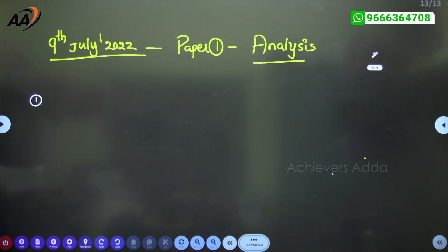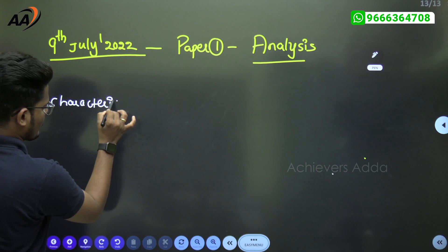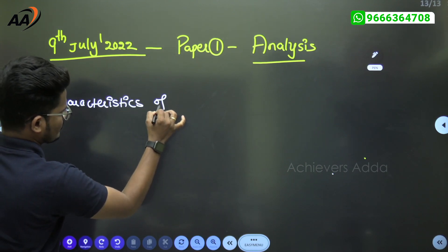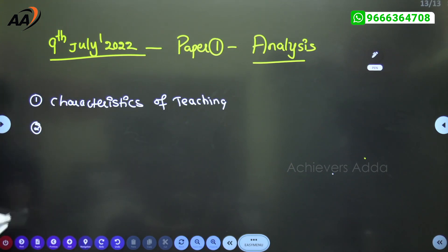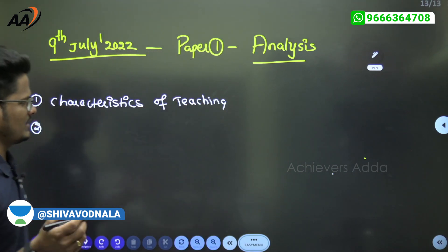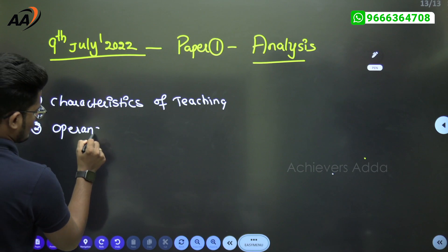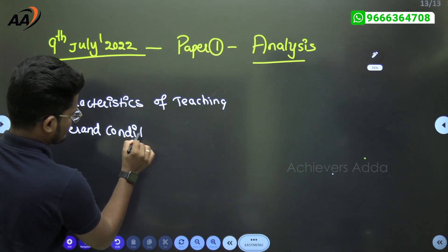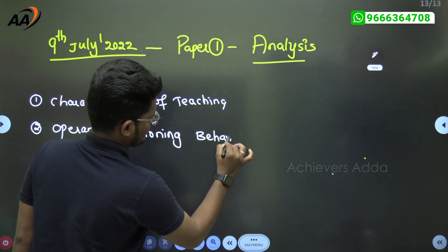Let's start with teaching aptitude questions. First one: characteristics of teaching - direct question. Second one: behaviorism theory, operant conditioning theory by Skinner. Related to that one question is there.